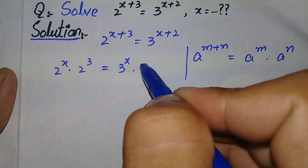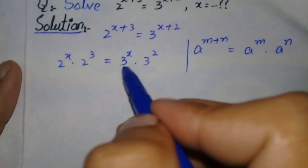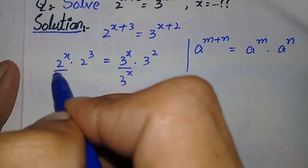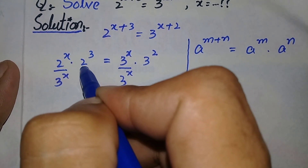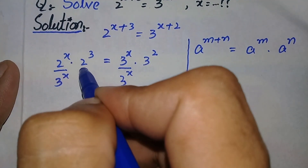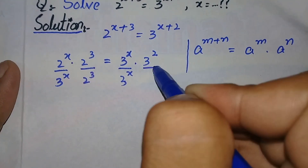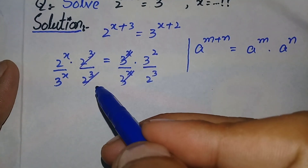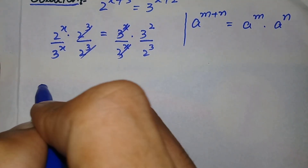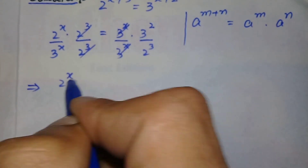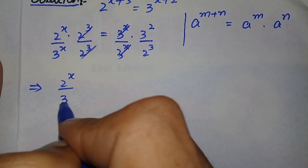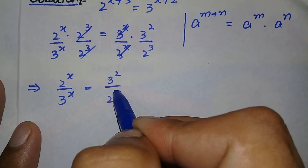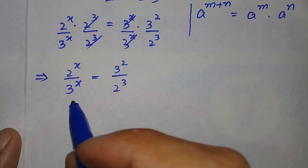...3 raised to power x multiplied by 3 raised to power 2. Now we will divide both sides by 3 raised to power x, and similarly divide these two terms by 2 raised to power 3. These terms will cancel, and on the left hand side these two terms will cancel, leaving only: 2 raised to power x divided by 3 raised to power x is equal to 3 raised to power 2 divided by 2 raised to power 3.